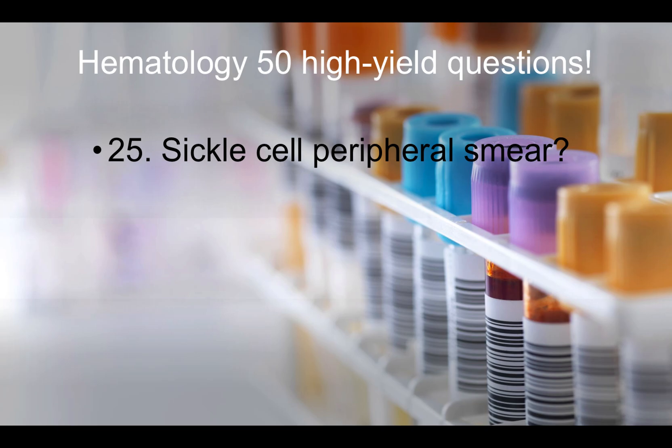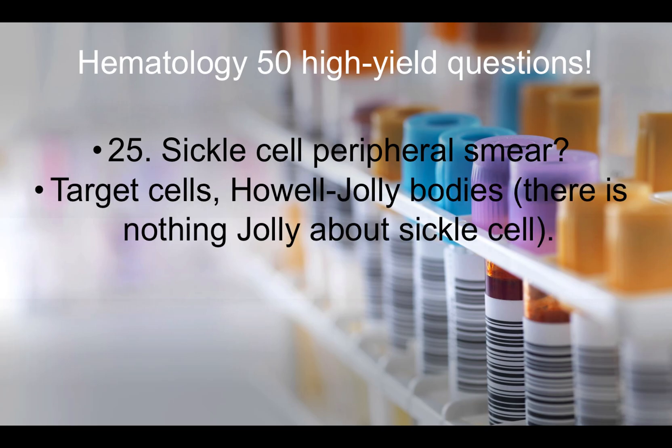Question twenty-five: Sickle cell peripheral smear will show what? It will show target cells and Howell-Jolly bodies. The mnemonic: there is nothing jolly about sickle cell. So if asked about peripheral smear in sickle cell, think Howell-Jolly bodies and target cells.